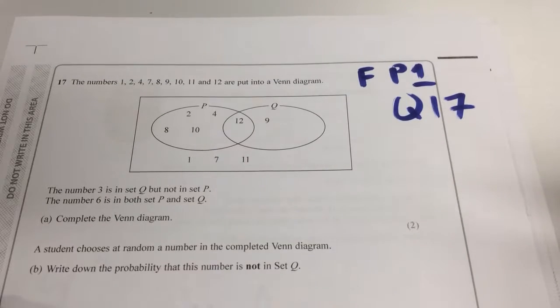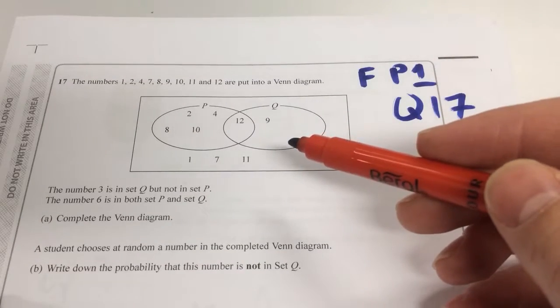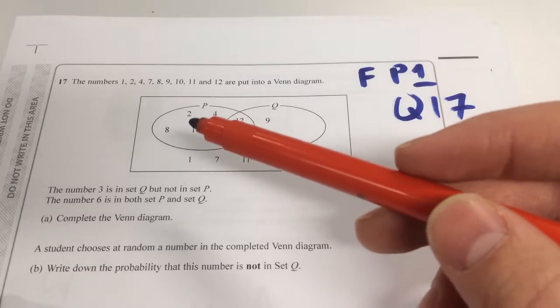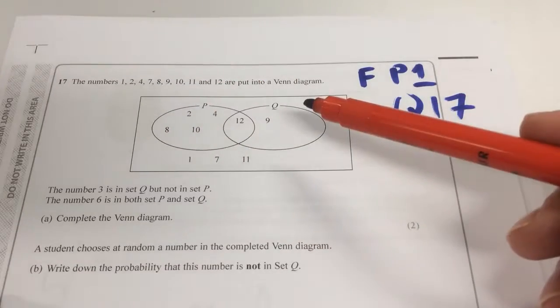Hello and welcome back to Martin Maths. We're going through the foundation paper series, Foundation Paper 1, Question 17. And we have a Venn diagram here. The numbers 1, 2, 4, 7, 8, 9, 10, 11, and 12 are put into this Venn diagram.